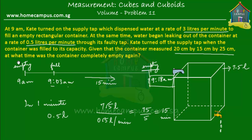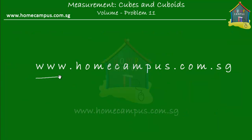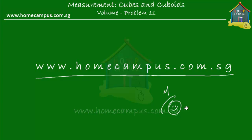At what time was the container completely empty again? The container was completely empty again at 9:18 a.m. That's it for this word problem. I hope you understood, and go solve similar word problems at www.homecampus.com.sg. Don't forget to practice because practice makes perfect. Bye-bye.